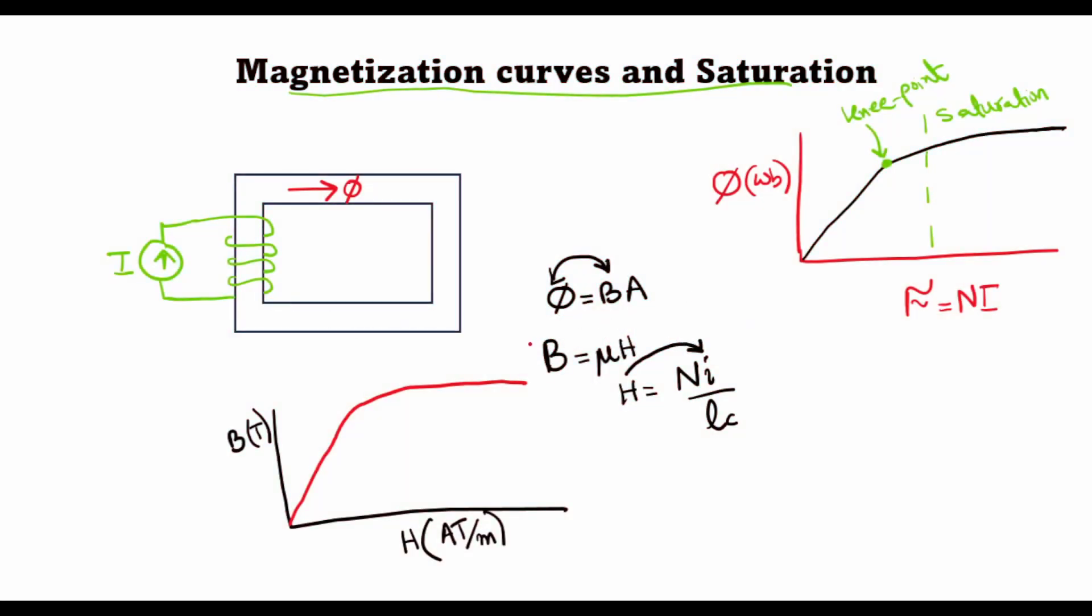Now since the relationship between B and H is governed by this parameter mu where mu is equal to mu0 times muR, mu0 is the permeability of free space which we know is a constant given by 4 pi times 10 raised to the power minus 7. So the only variable which changes with the magnetic field intensity is muR.